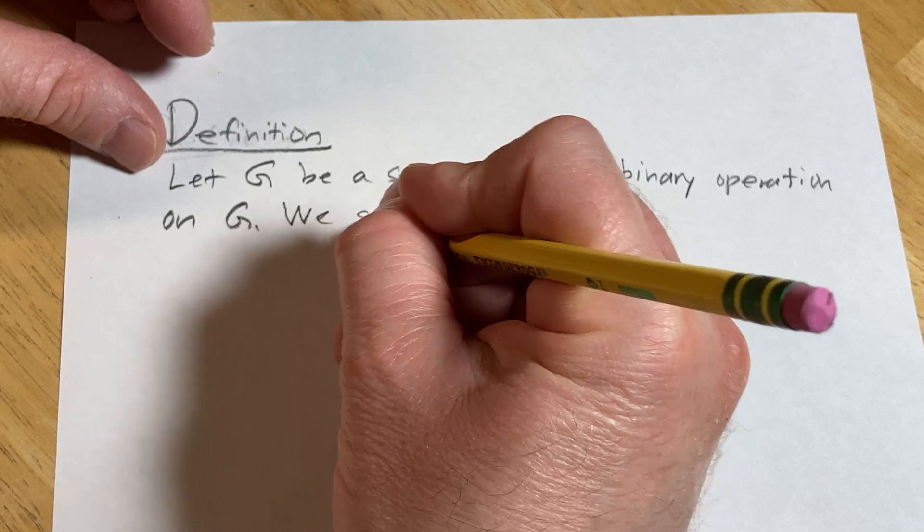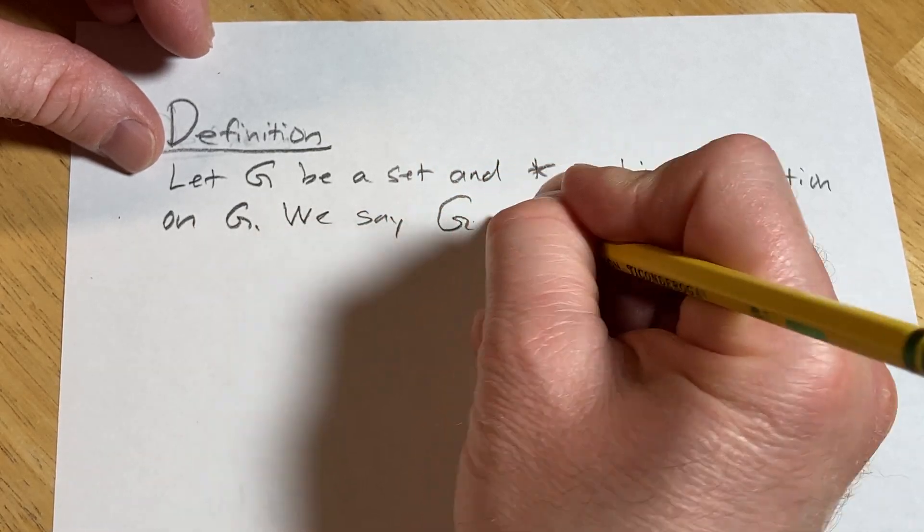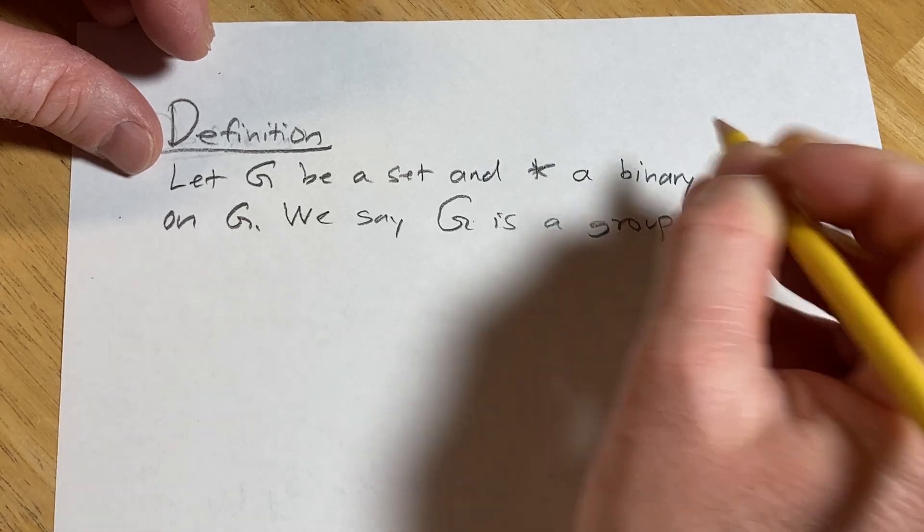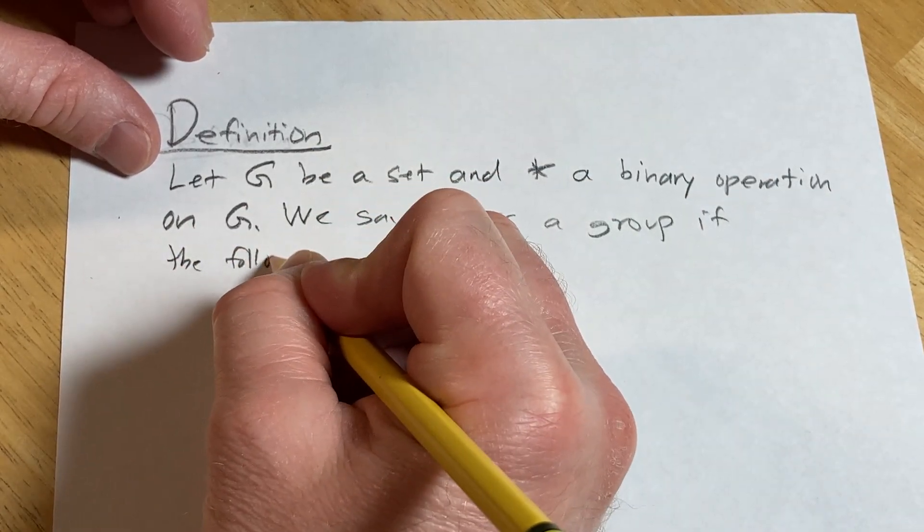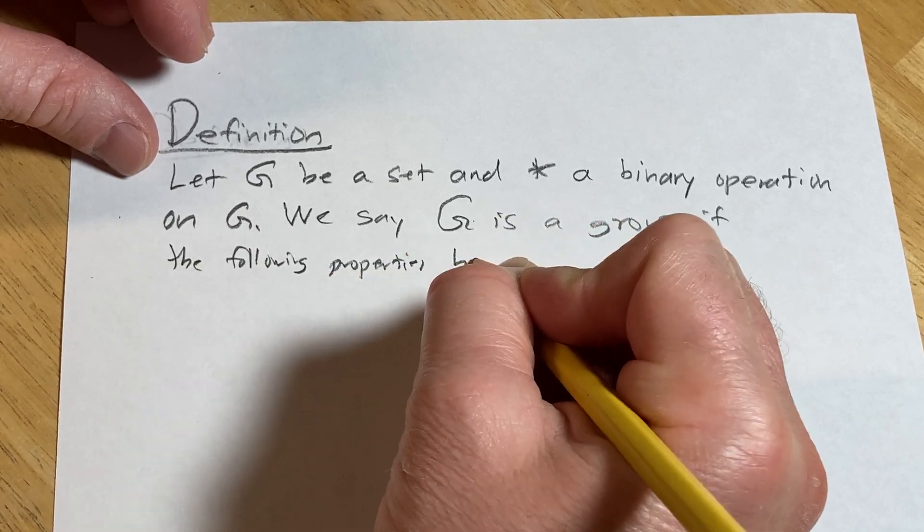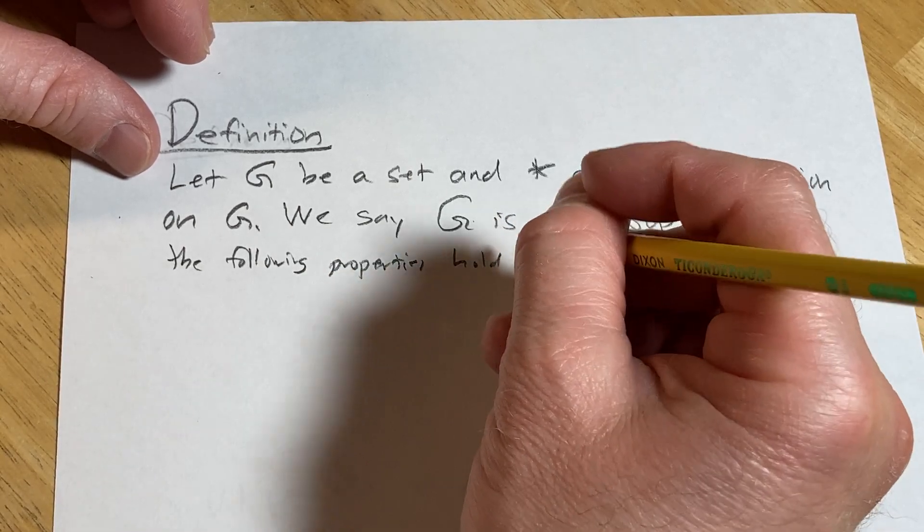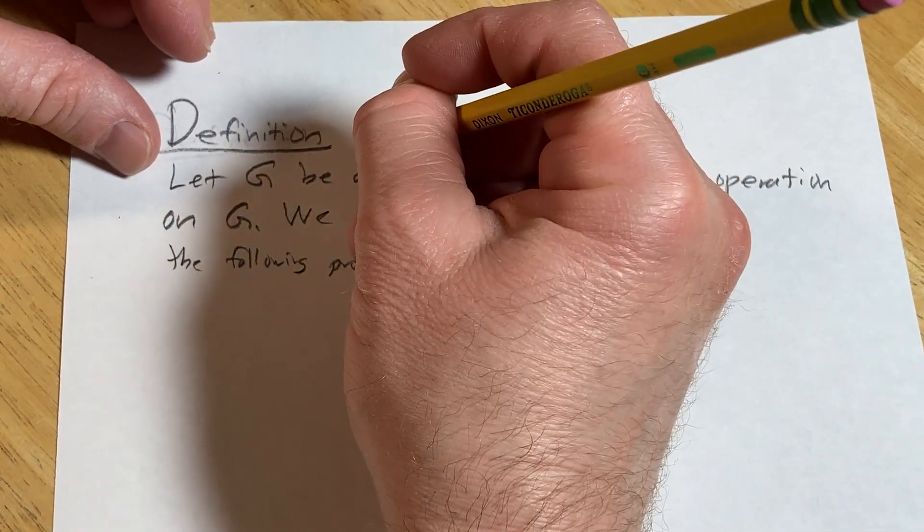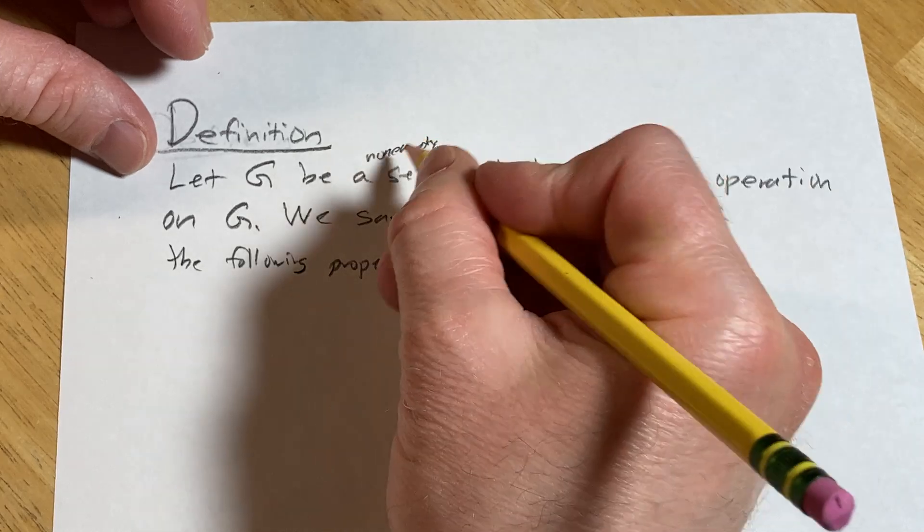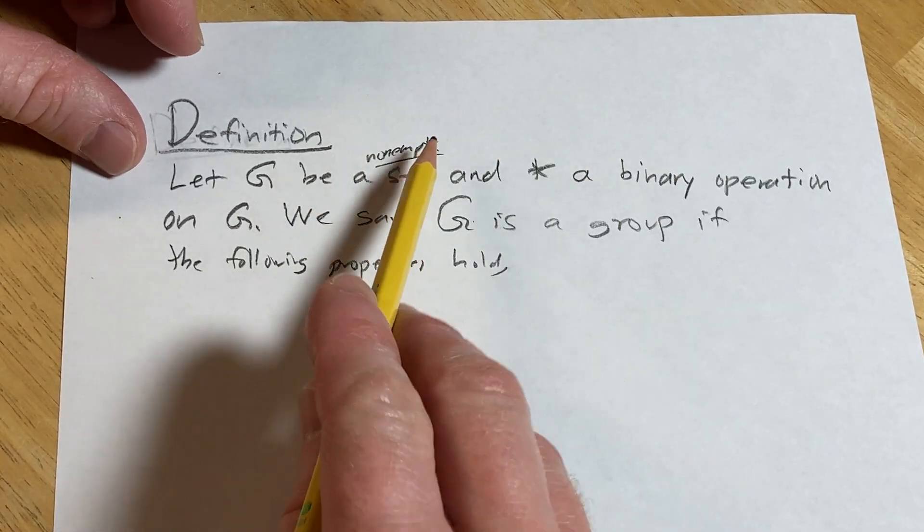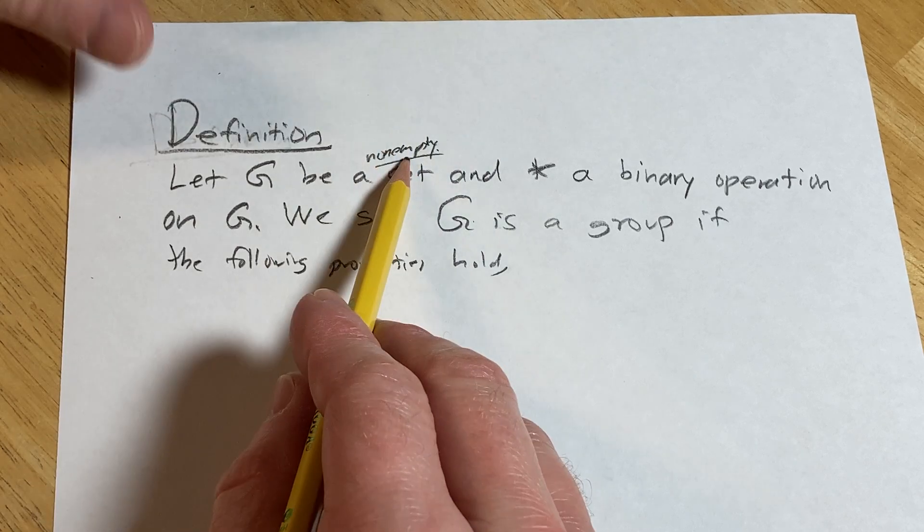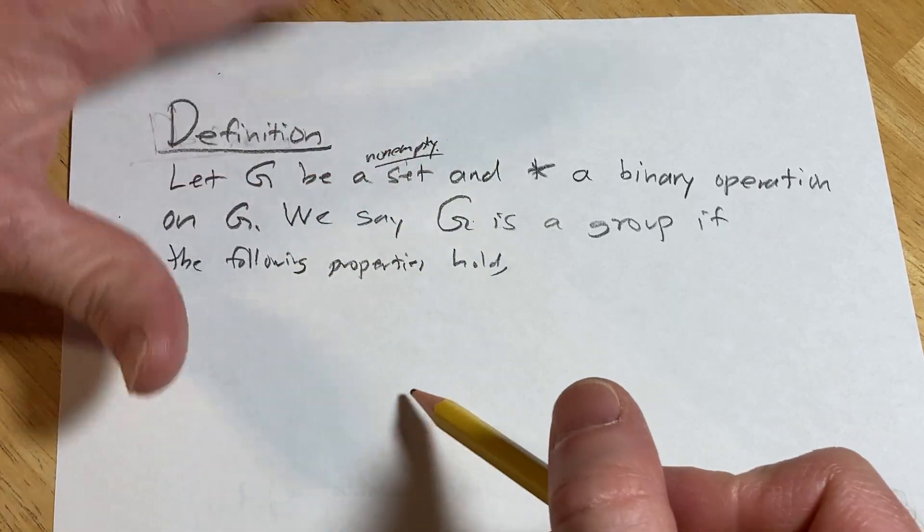We say G is a group if the following properties hold. I should probably say G is a non-empty set, just to make it a little bit easier. It's going to be non-empty by one of the conditions below that I'm going to state. But let me just throw in the non-empty part. We'll talk about why it's non-empty and why I actually don't need to write it because it's going to come up down here.